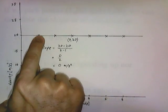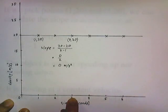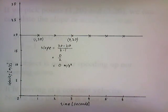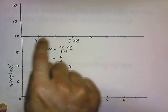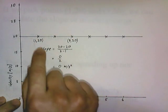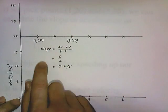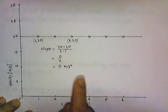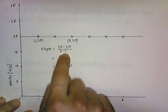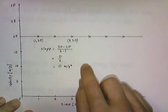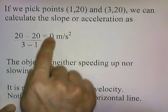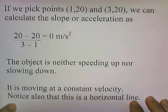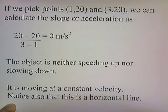At one second it's going 20 meters per second, at two seconds 20 meters per second, at three seconds 20 meters per second — so our graph is just a horizontal line. If we pick the points (1, 20) and (3, 20), we calculate the slope: 20 minus 20 on top, over 3 minus 1 on the bottom, gives 0 divided by 2, or 0. So the acceleration is 0 meters per second squared — the object is neither speeding up nor slowing down, just cruising at a constant velocity. When the slope is 0, the line is horizontal.